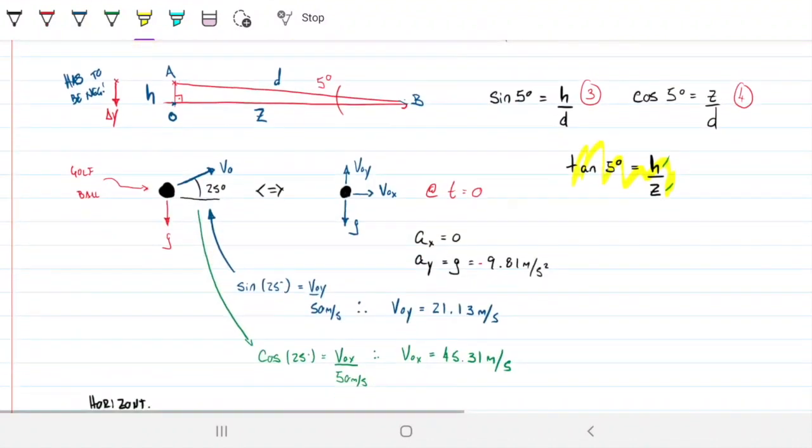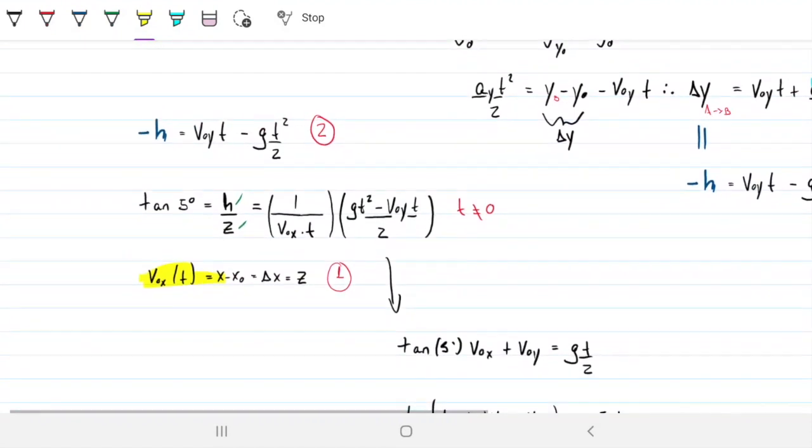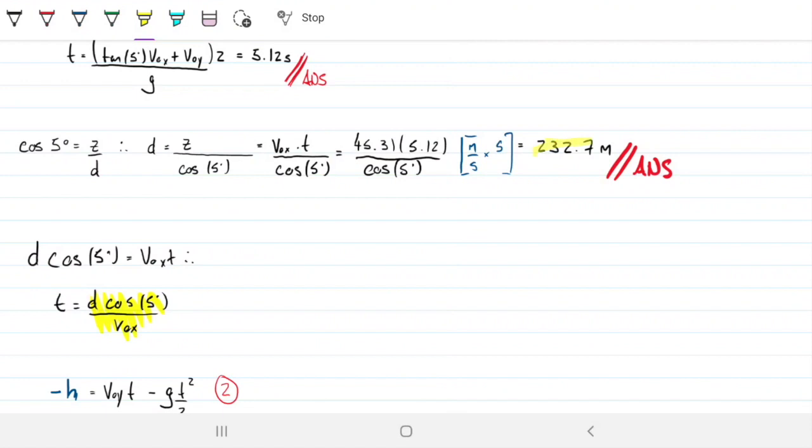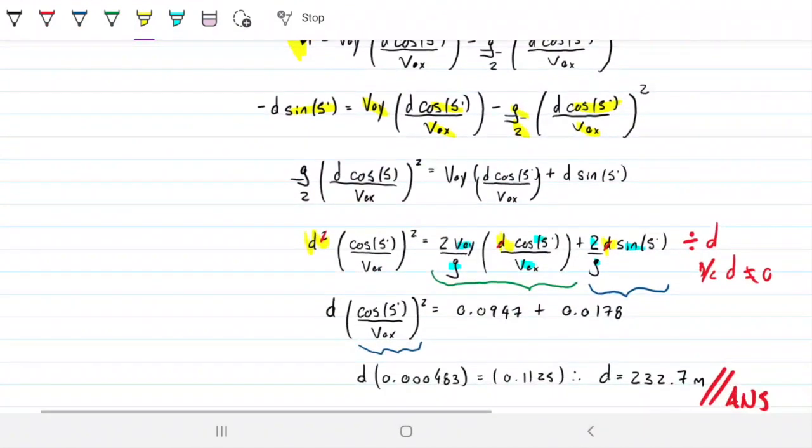Remember that on the first way in video one, we found the time first and then after the time we found how long D is, which is what we're looking for. On the second video we found straight what D is.